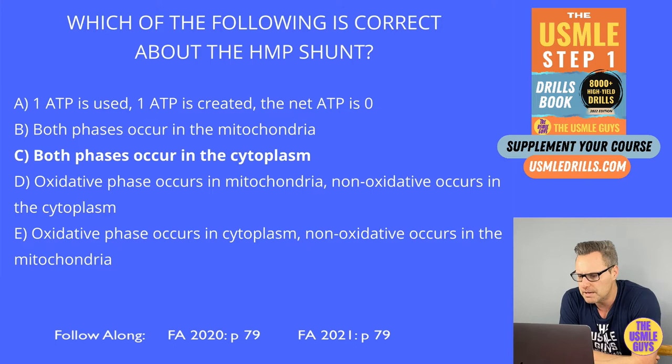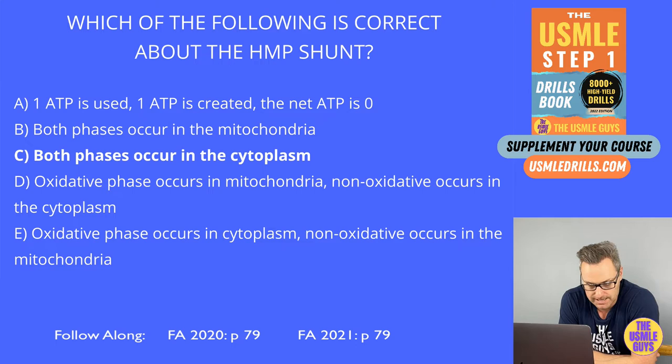When dealing with hemolytic anemia, we will see Heinz bodies — these are seen as a result of denatured globin chains precipitating within the red blood cell — and we will see bite cells. Bite cells are the result of phagocytic removal of those Heinz bodies by your splenic macrophages.